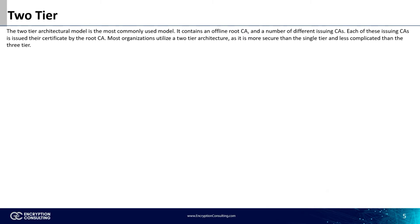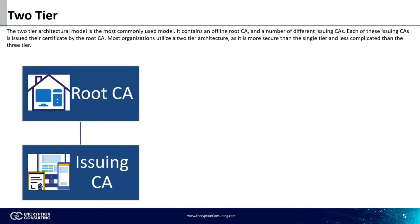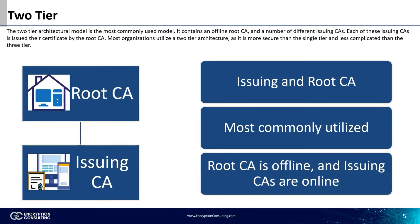The two-tier model is the architecture referenced in all of our previous videos. This model is made up of an issuing and root certificate authority. This is the most commonly used model, as it is safer than a single-tier and less complicated than the three-tier. This model keeps the root CA securely offline, while all issuing CAs are kept online.